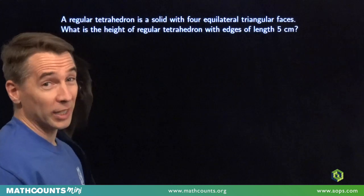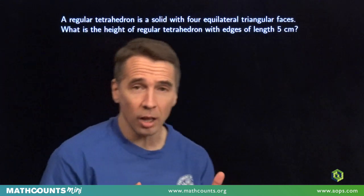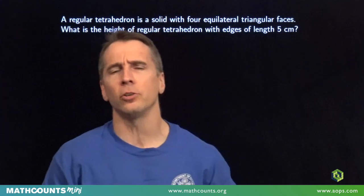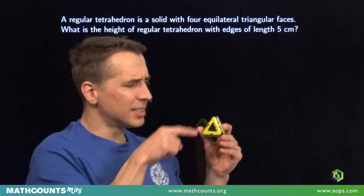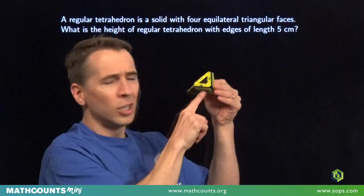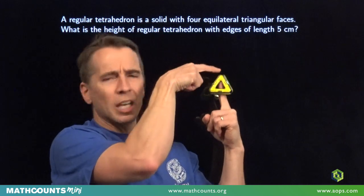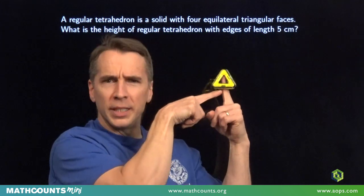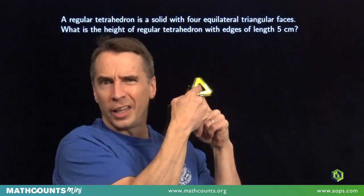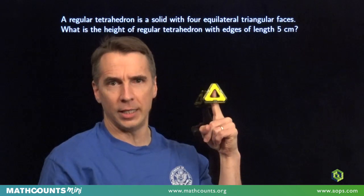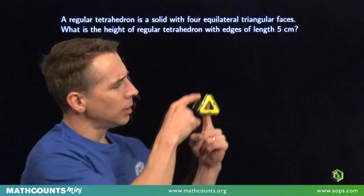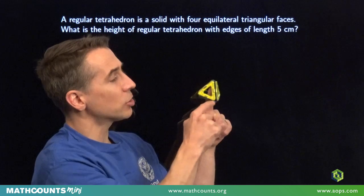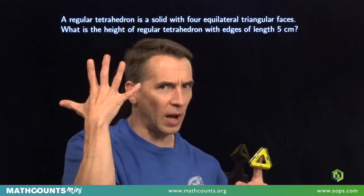In this problem, we're working with a regular tetrahedron — that's the solid with four equilateral triangular faces. We have to find the height of the regular tetrahedron, which is the distance from a vertex to the opposite face. I think of a segment going from that vertex perpendicular to the opposite face. The tetrahedron in this problem has edges of length 5 centimeters, meaning the side length of each triangular face is 5 centimeters.